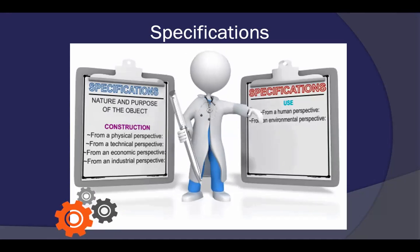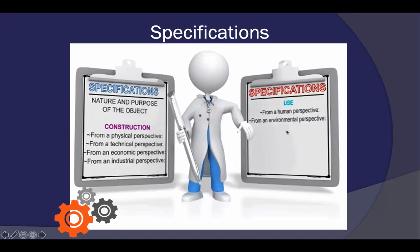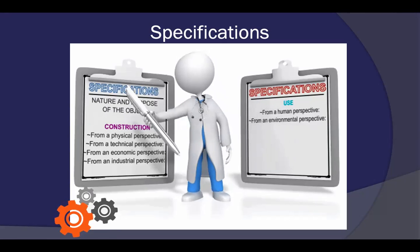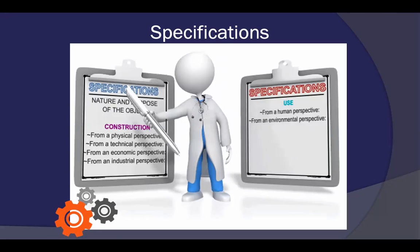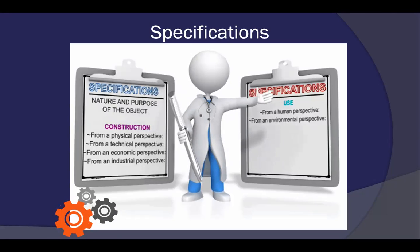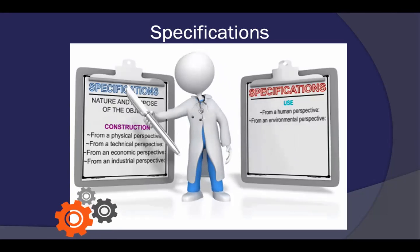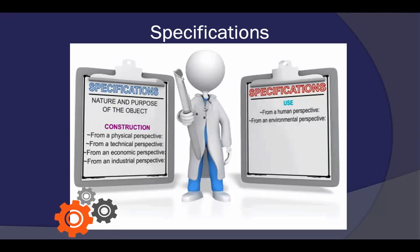The fifth perspective concerns specifications in regards to use — the human perspective. The human perspective takes into account the people who will use, maintain, and repair the product. The person or company should therefore design and manufacture an object that people will like and that is easy to maintain. Aesthetics, safety, and comfort are also concerns.